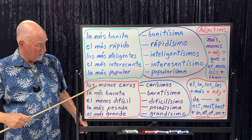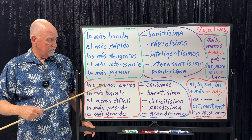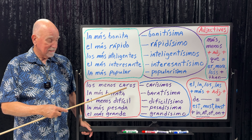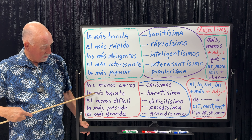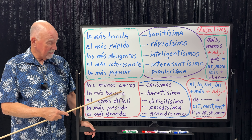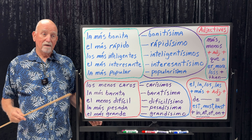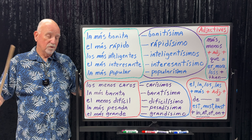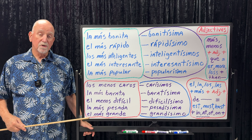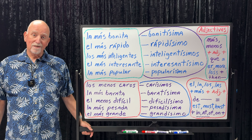We have another cluster of examples. Los menos caros — remember, anywhere you use más, you can use menos in the same way. This would be the least expensive. La más barata — the cheapest. Barata is cheap. Let's say you're talking about a comida, a food that you're going to order: barata — cheap; más barata — cheaper; and la más barata — cheapest.